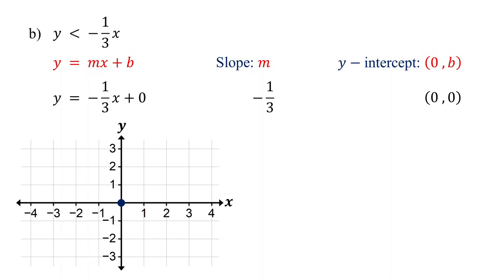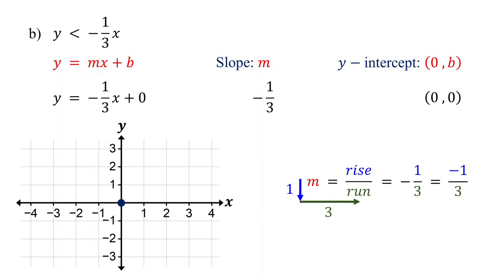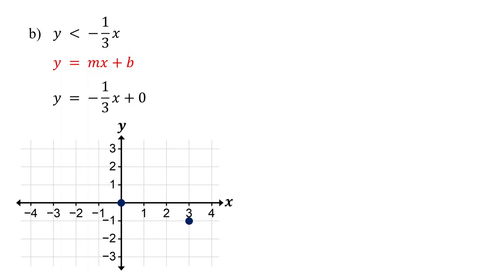Then plot another point using the slope. Slope is rise over run, and here it is negative one-third. Place the negative sign in the numerator — this doesn't change the value of the slope since they are equivalent fractions. So the rise is one unit down, and the run is three units to the right. Now start at the y-intercept and move down one unit, then move to the right three units and plot the second point. Finally, draw the boundary line that passes through these points. Since the inequality is strictly less than, use a dashed line, which means points on the line are not part of the solution.